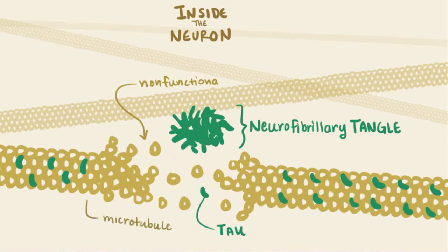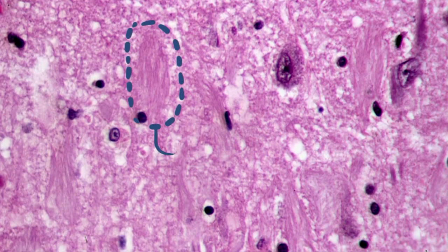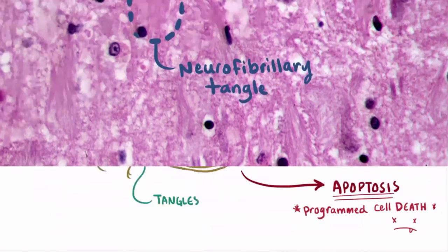Neurons with tangles and non-functioning microtubules can't signal as well, and sometimes end up undergoing apoptosis, or programmed cell death. Here's an image of histology showing these neurofibrillary tangles formed inside the neuron.